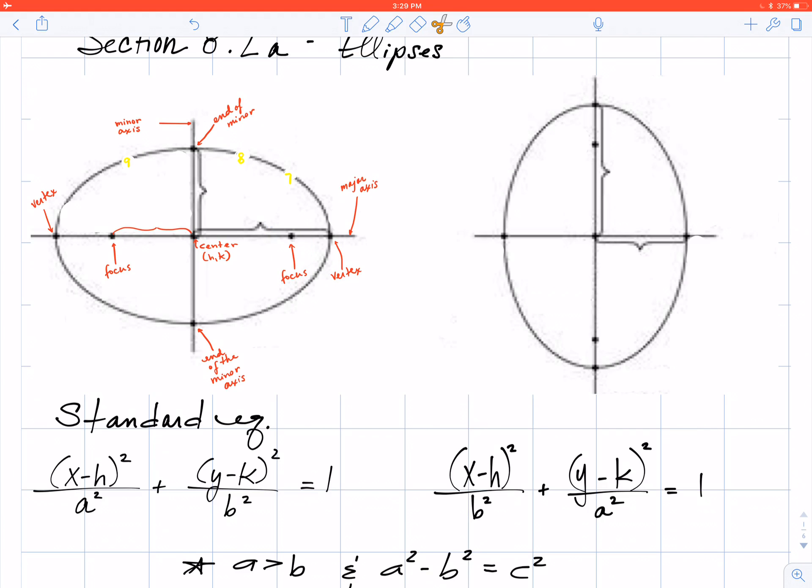Next I'd like to point out that I have something called distance a. Notice that this is the distance from the center to the vertex. Distance a is center to vertex. And then I have distance b. Distance b is from center to end of the minor axis. And then lastly I have distance c. Distance c is from center to focus.